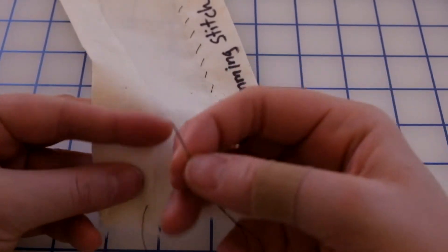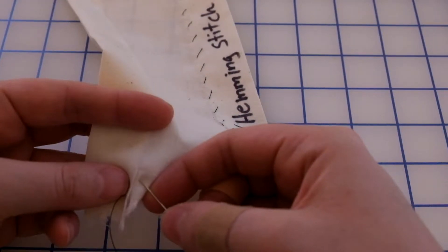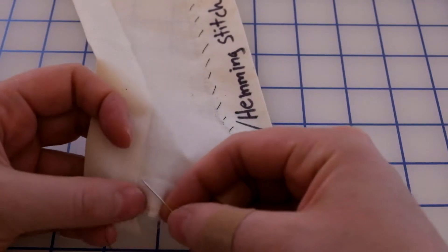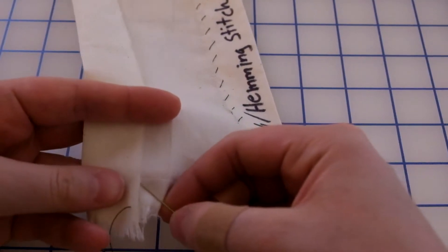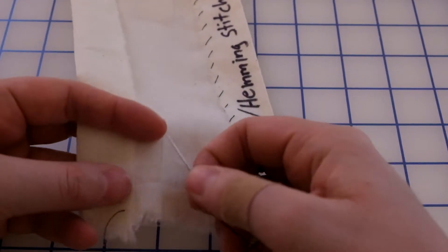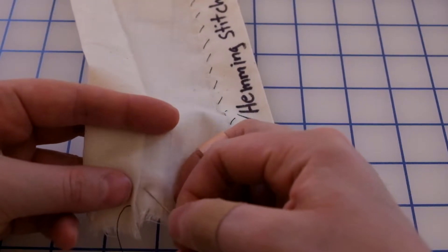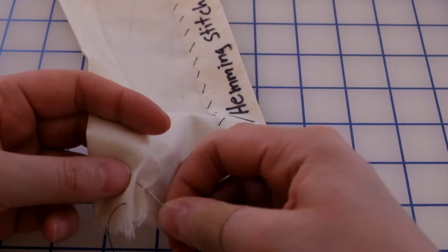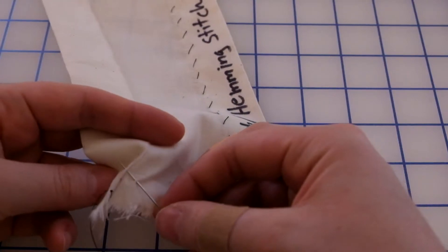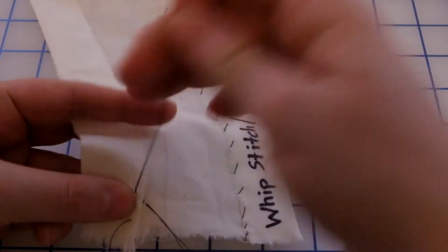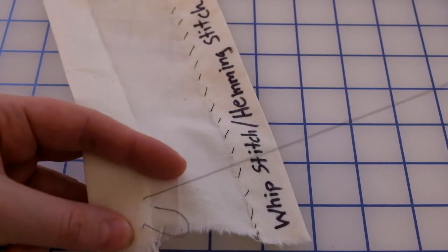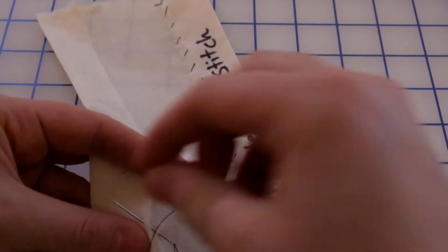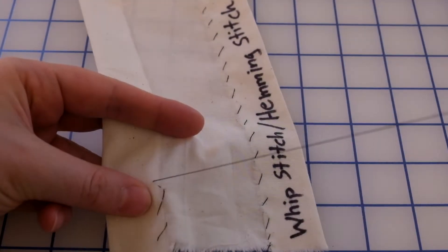With this stitch, the goal is to take as small of a stitch on the front of the fabric, and then your stitch will be bigger through the folded up part. So you're going to take a little stitch, and then your needle is going to continue through the folded part and come up through that folded part. Just a little stitch and then through the folded area.